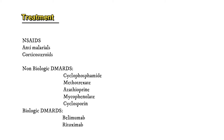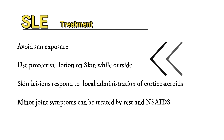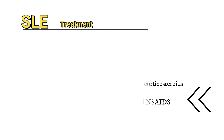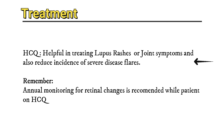Cyclosporine. Biologic DMARDs include belimumab and rituximab. Patients should apply a protective lotion on skin while out of doors. Skin lesions often respond to local administration of corticosteroids. Minor joint symptoms can be treated with rest and NSAIDs. Hydroxychloroquine may be helpful in treating lupus rashes or joint symptoms and also reduces the incidence of severe disease flares. Annual monitoring for retinal changes is recommended while the patient is on HCQ.